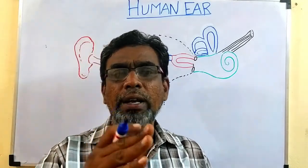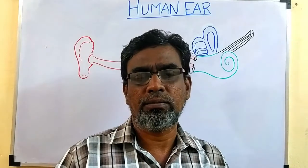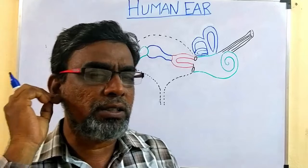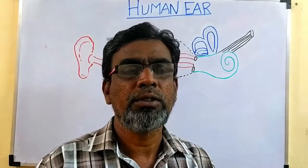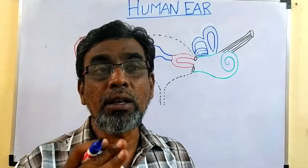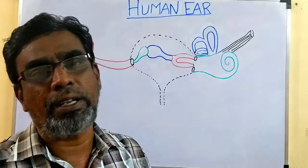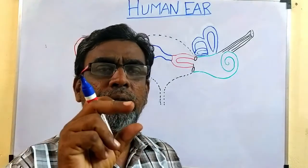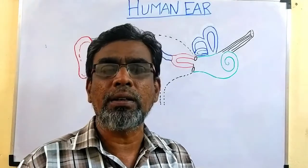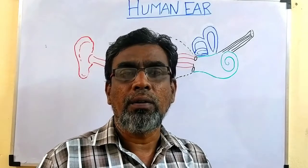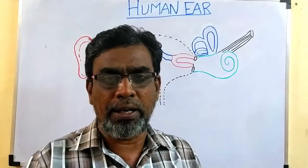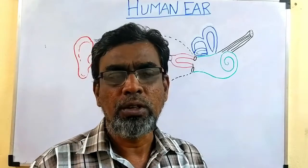The ear has three regions. One is the external ear, which is visible to the eye. The second region is the middle ear. The third region is the inner ear. We will discuss the role of each region, the structures present in the external, middle, and inner ear.